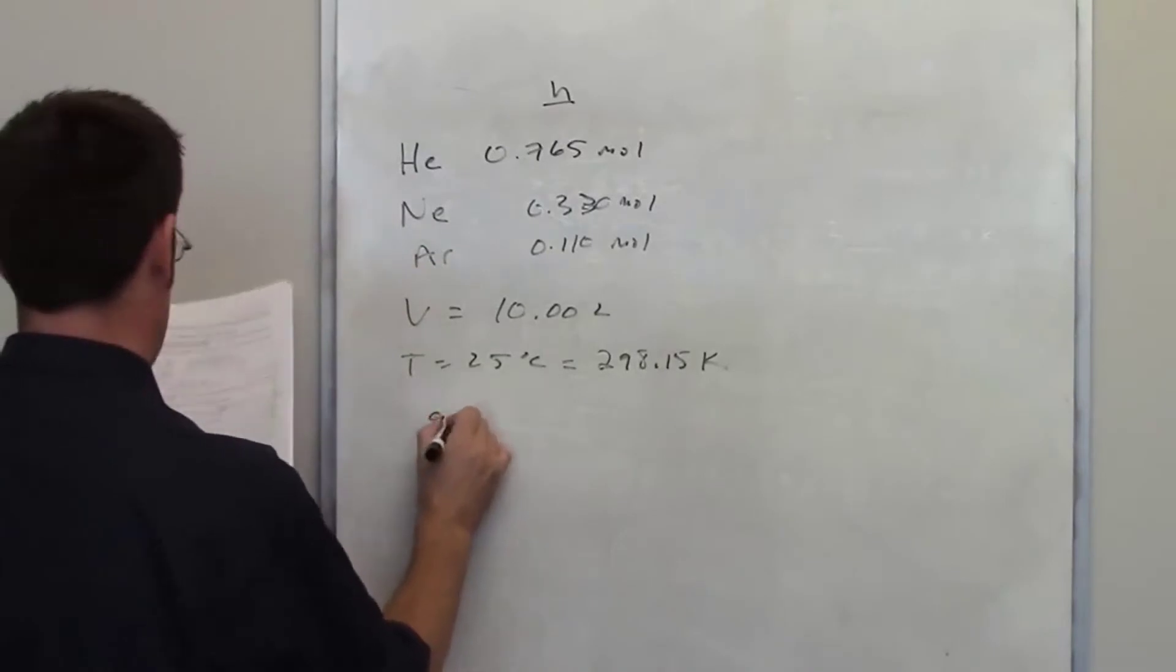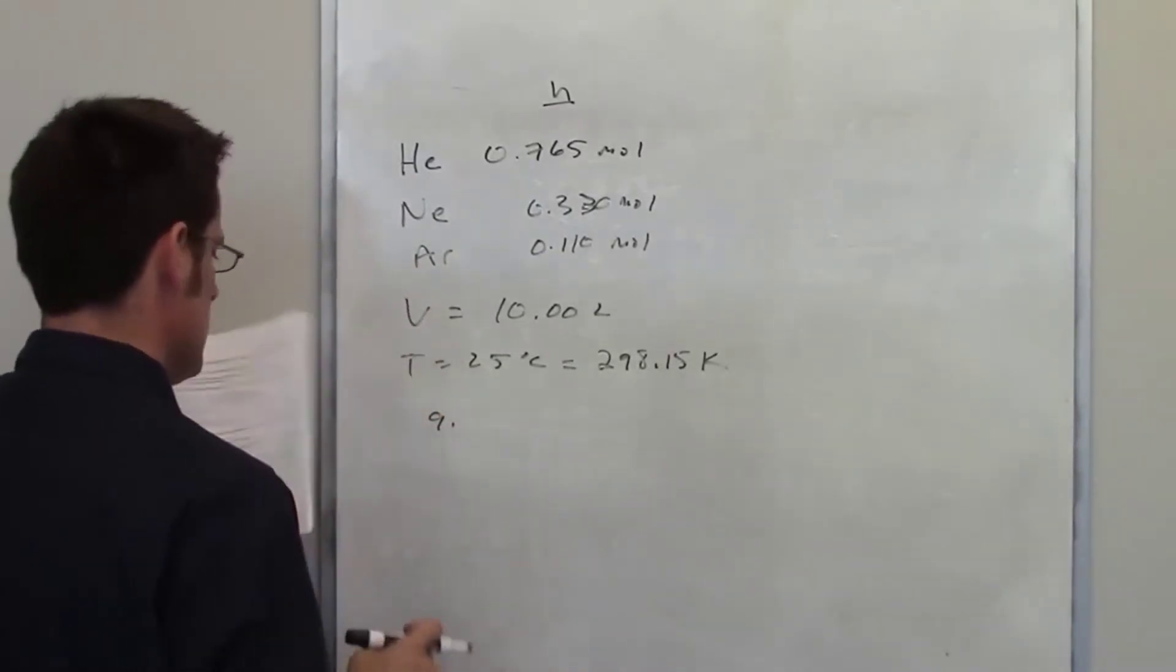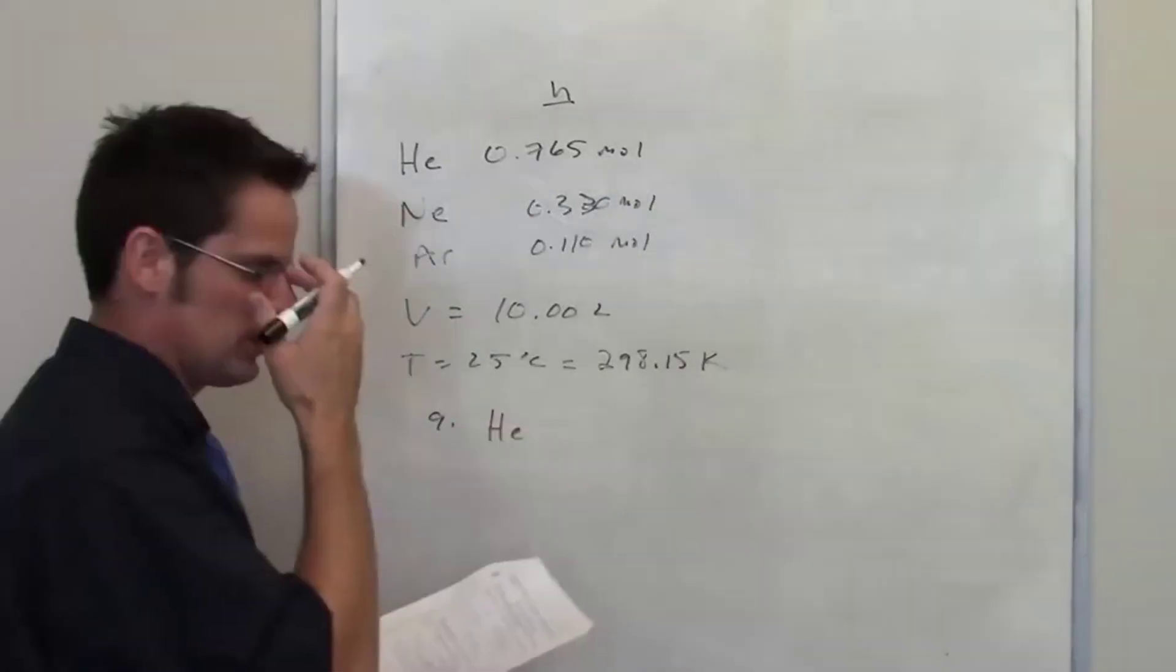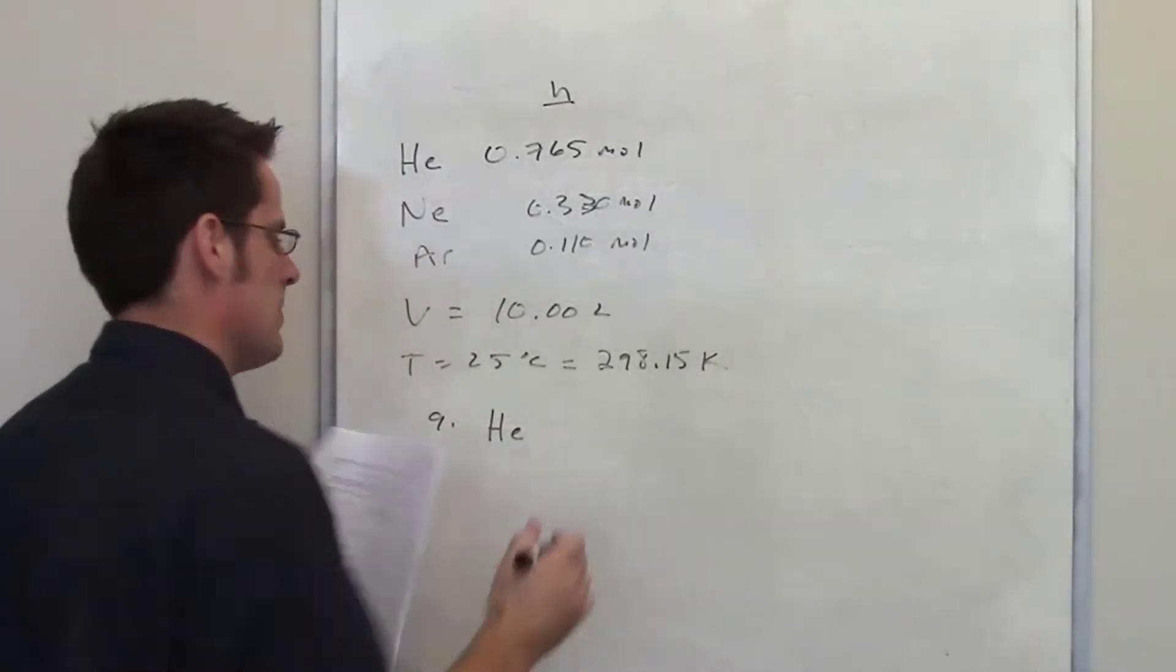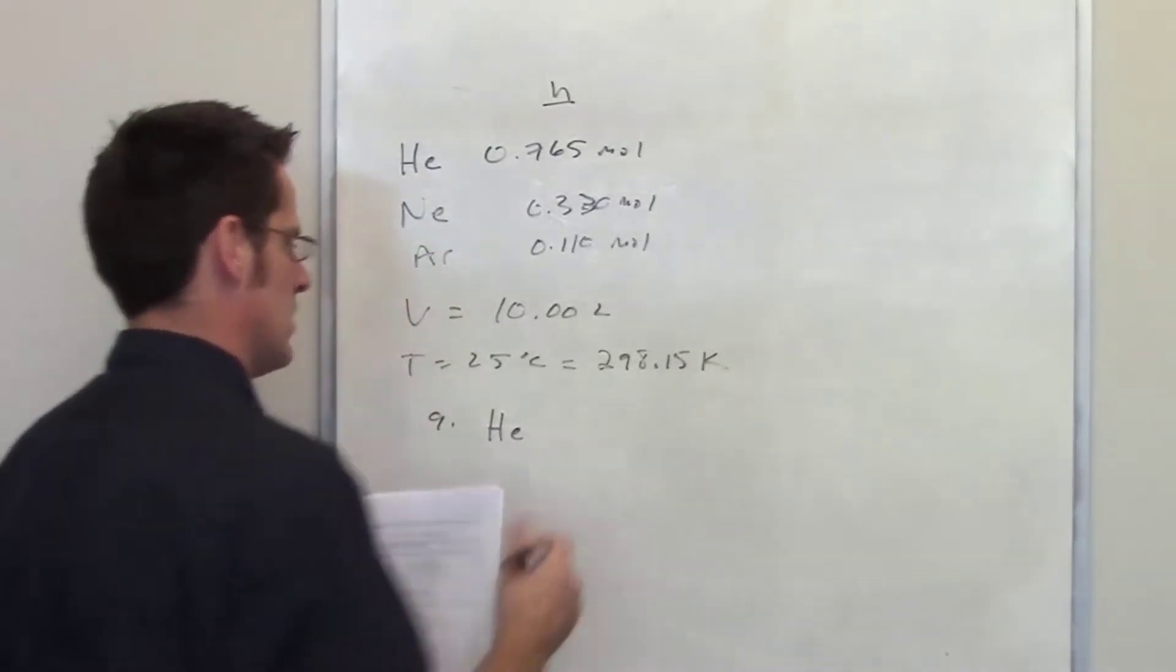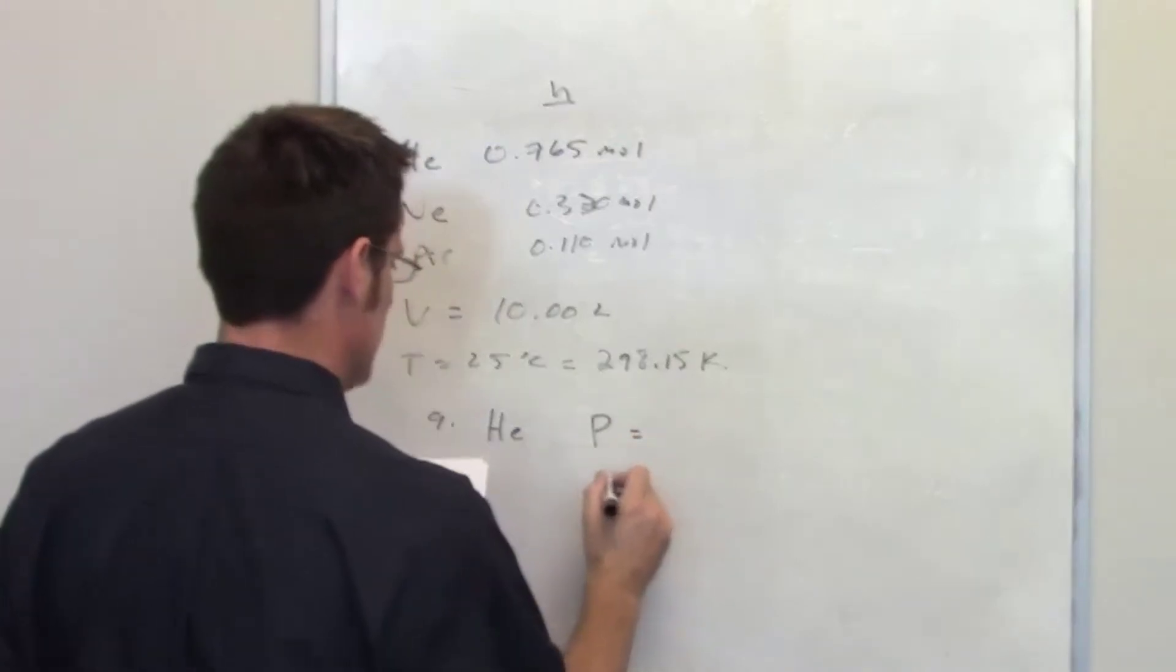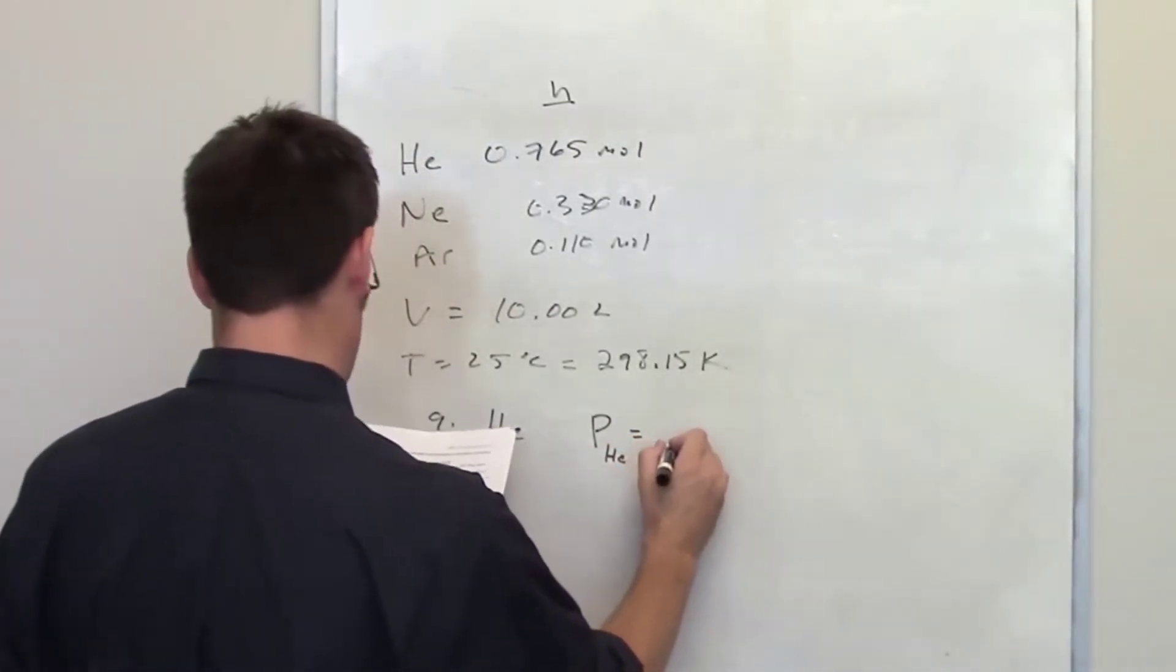It's asking me in part A to calculate the partial pressure of each of the gases in the mixture. So I'm going to do this for helium. As I discussed in a separate video, if you amalgamate Dalton's law with the combined gas law, you discover that the pressure of any individual gas, in this case helium, is equal to the number of moles of that individual gas multiplied by RT divided by V.